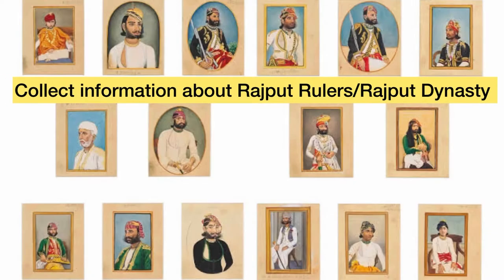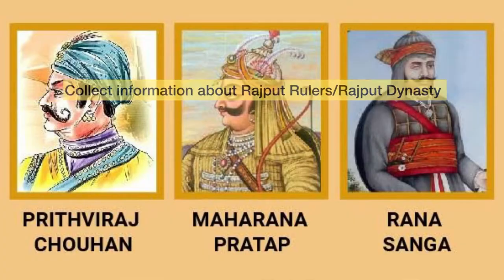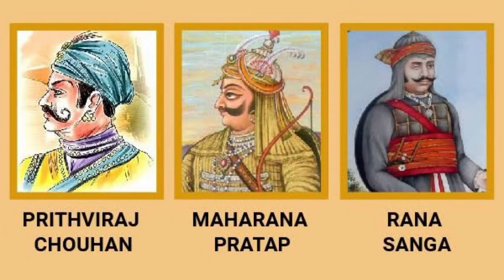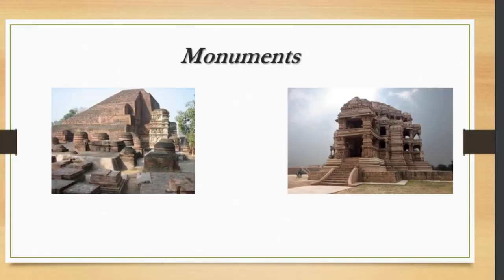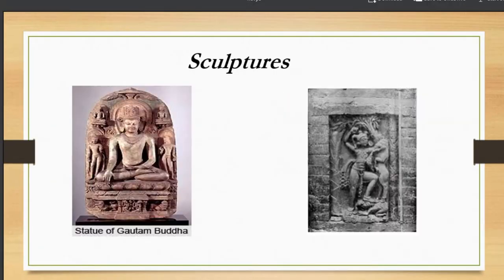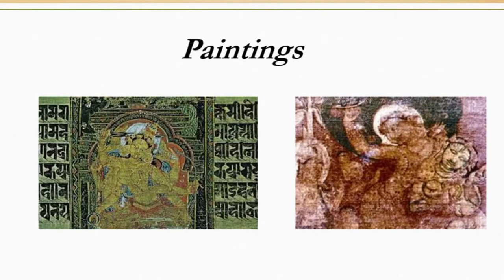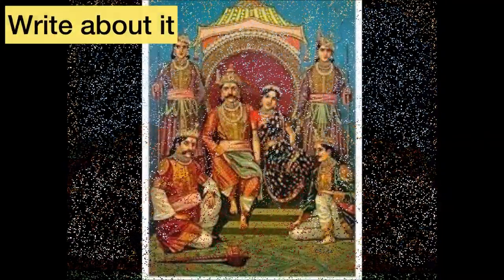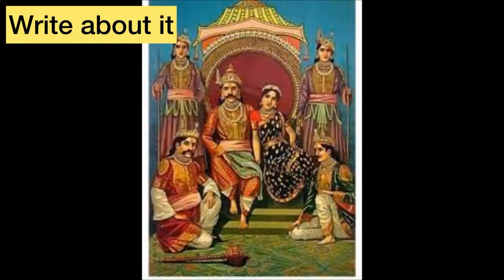So what you need to do is choose any one Rajput ruler from the various Rajput dynasties we have already studied. Then you need to collect information about that particular ruler. You need to collect pictures of the monuments, inscriptions, coins, sculptures, paintings, etc. of that particular ruler and write about it.